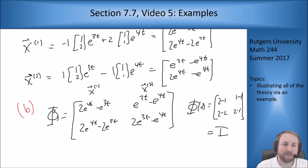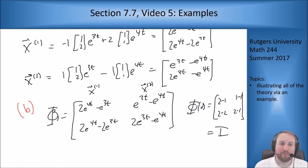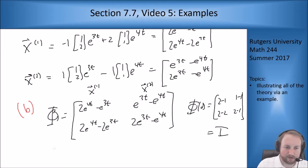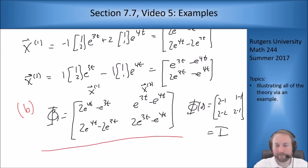The way we found this was: knowing the general solution, we just had to pick the appropriate constants C1 and C2 to meet the right initial conditions to make φ(0) equal the identity. We'll come back to this matrix in a little bit.